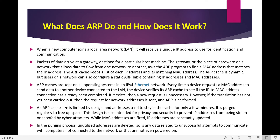Users can also update a static ARP table containing IP addresses and MAC addresses. ARP caches are kept on all operating systems in an IPv4 Ethernet network. Every time a device requests a MAC address to send data to another device connected to the LAN, the device verifies its ARP cache to see if the IP-to-MAC address connection has already been completed. If that connection is already completed, the data will be present in the table and a new request is unnecessary. However, if the translation has not yet been carried out, then the request for the network address will be sent and ARP will be used.